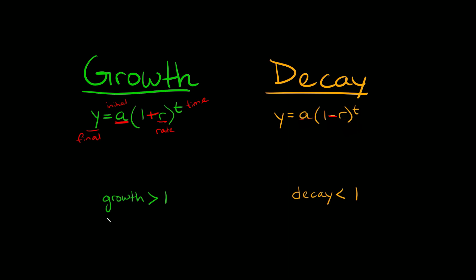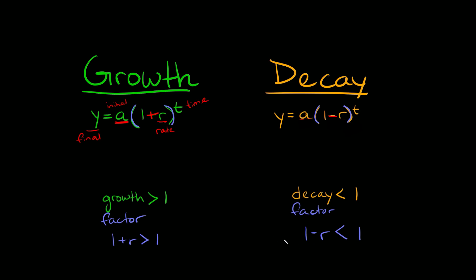I want to talk about the growth factor and the decay factor — don't confuse these with the growth rate. The growth factor is just what's inside the parentheses, the (1 + r). When that value is bigger than 1, you can identify the function as exponential growth. The decay factor is (1 - r). When that value is less than 1, you can identify the function as exponential decay.